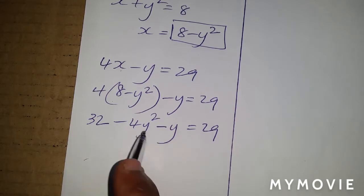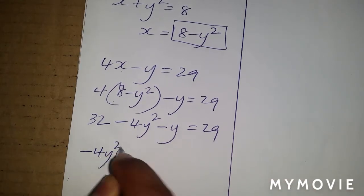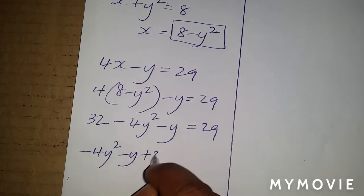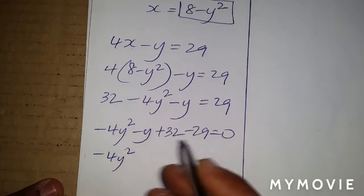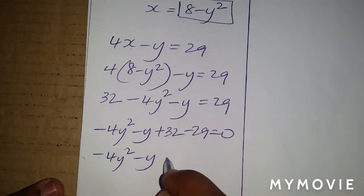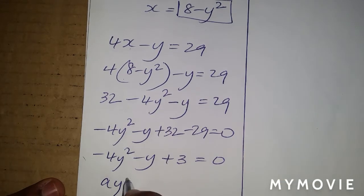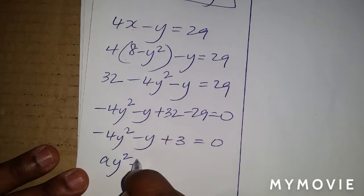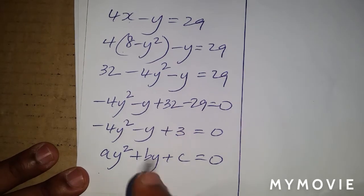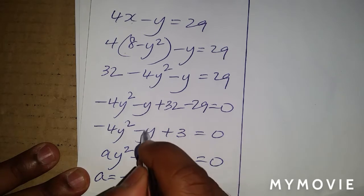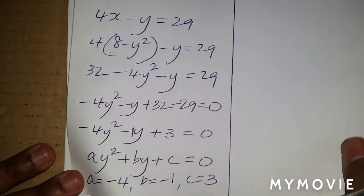So we have 32 minus 4y squared minus y equals 29. My intention is to make this a quadratic equation. The only difference from before is instead of having x you have y, but it's the same thing. Rearranging — bring the 32 across and minus 29 — gives minus 4y squared minus y plus 3 equals 0. This is in the form ay squared plus by plus c equals 0, where a is negative 4, b is negative 1, and c is 3.